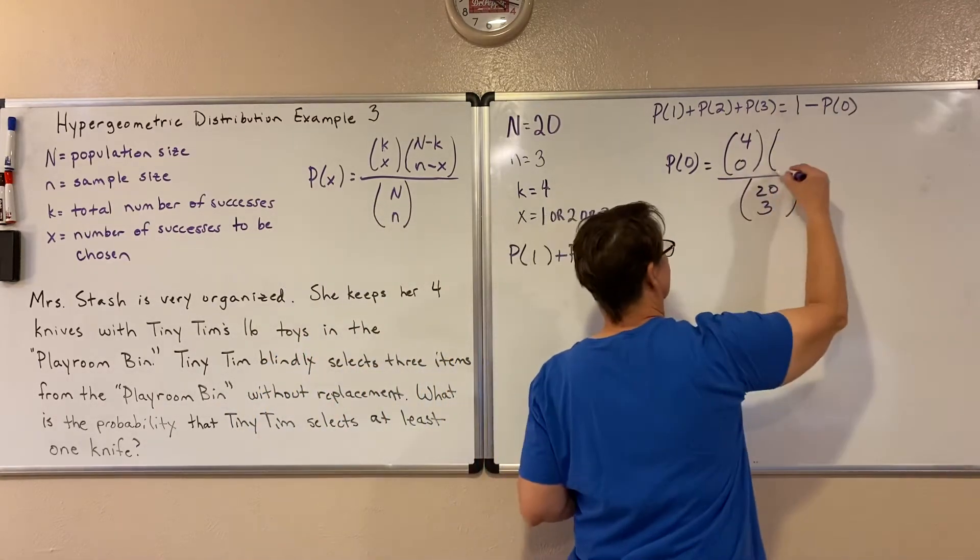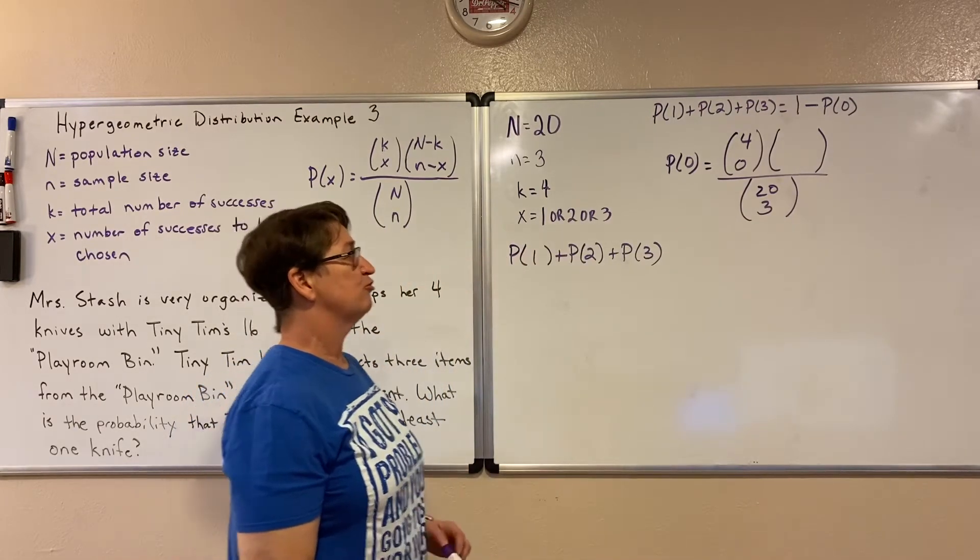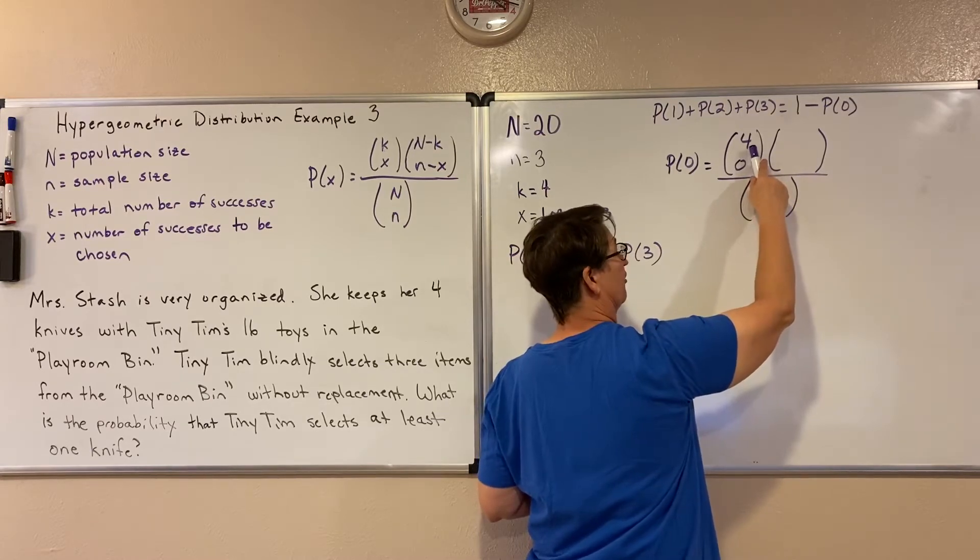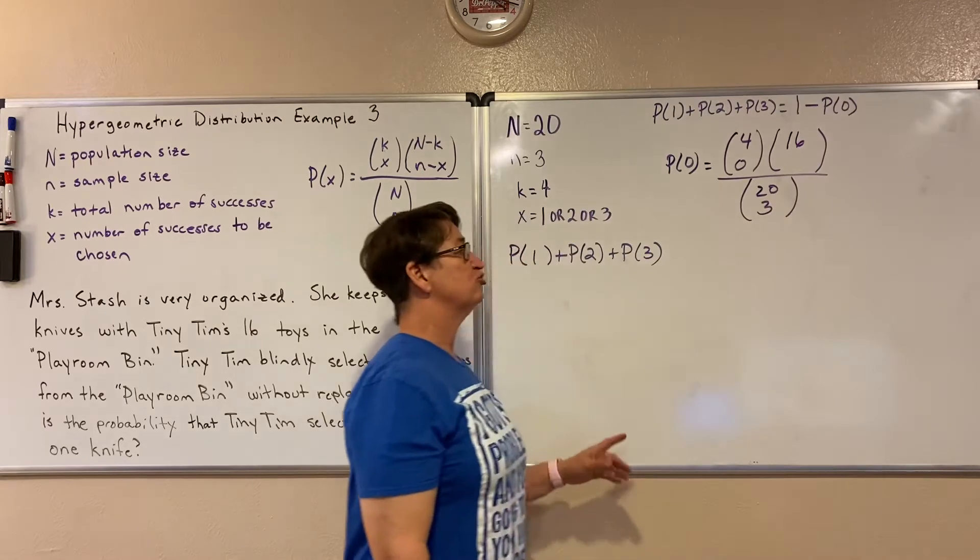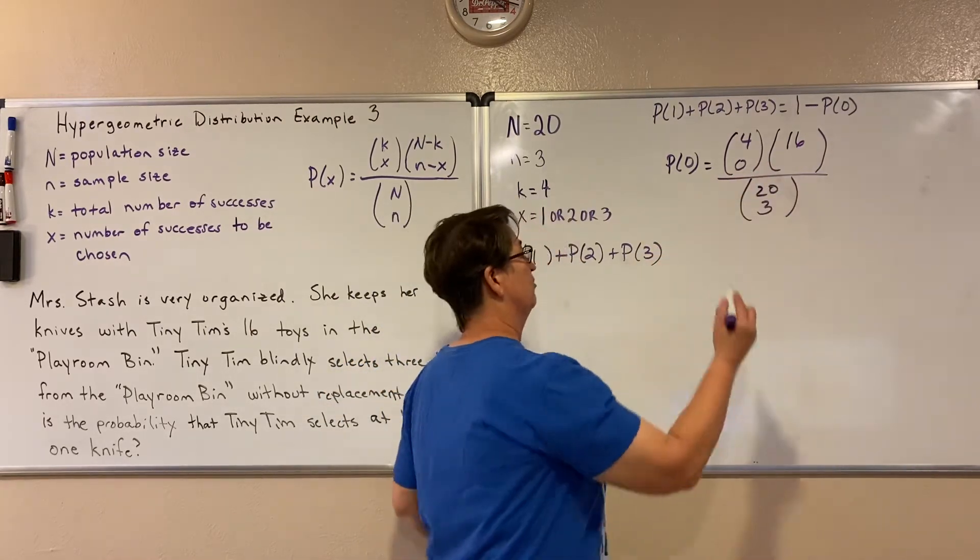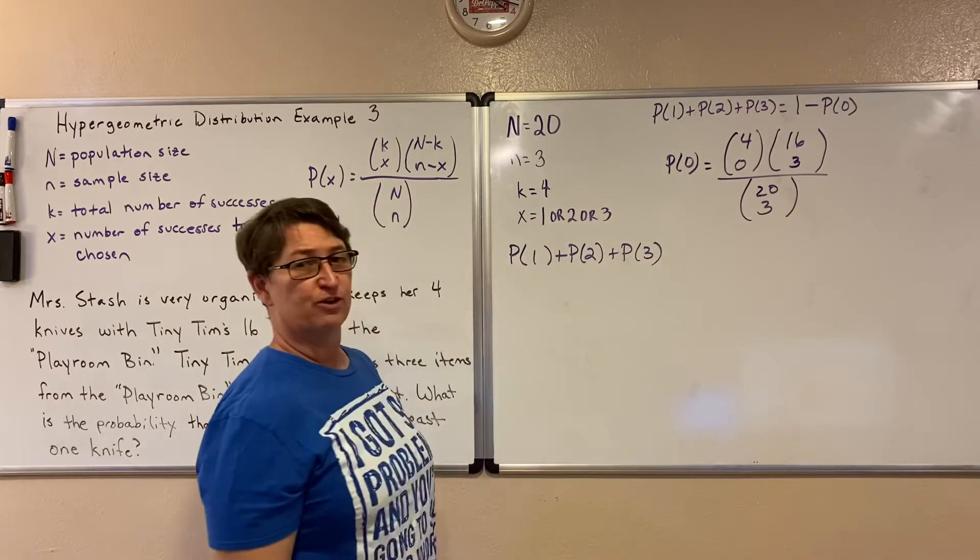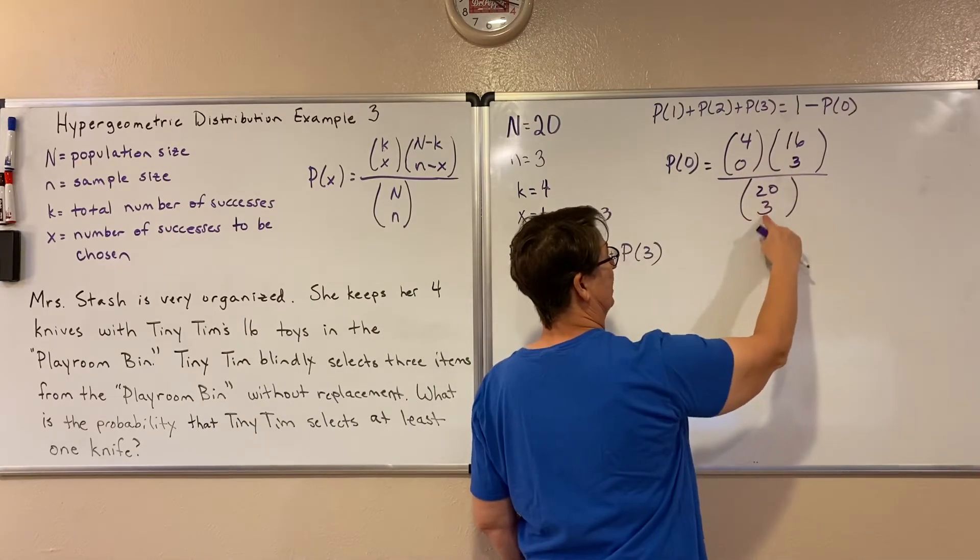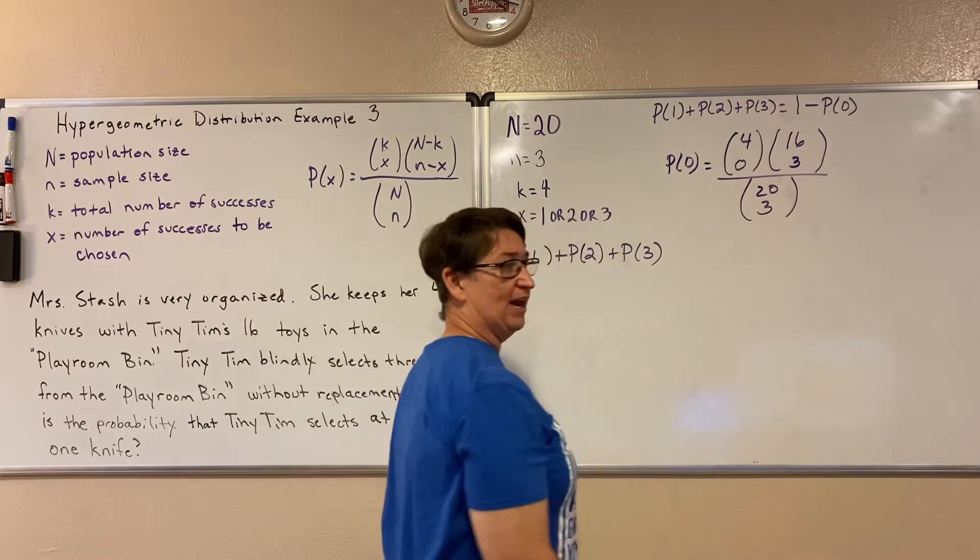So now if there are four knives or four successes in there to make up the 20, how many toys are there and how many failures are there? There are 16. And if he is choosing zero knives, how many of the toys would he have to choose? He would have to choose three toys. So now we've filled in for our formula. Notice that zero plus three does equal three and four plus 16 does equal 20. Those should always add up like that.